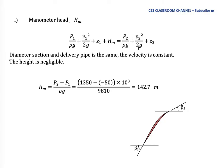We have the outlet parameters: p over ρg, v-squared over 2g, and z. Since the diameter of suction and delivery pipe is the same, velocity is constant and we cancel those terms. Because we focus only on inlet and outlet locations, the height z is negligible. After simplification, the manometric head is HM = (P2 − P1) / (ρg), and substituting values we get 142.7 meters.